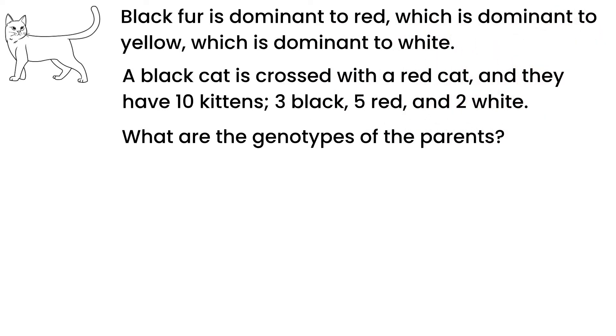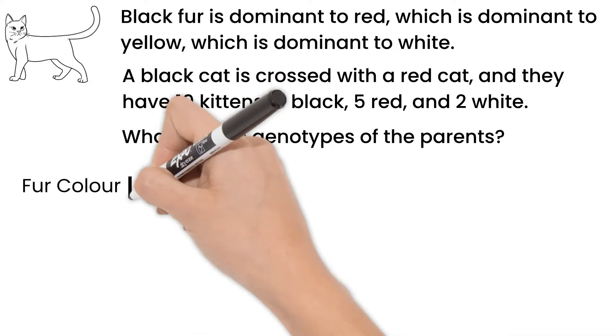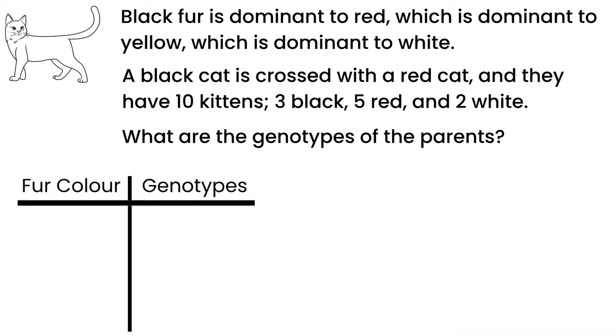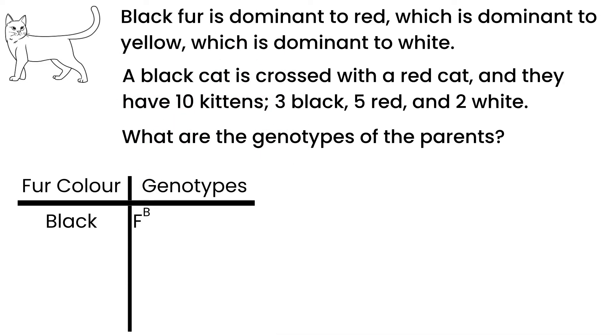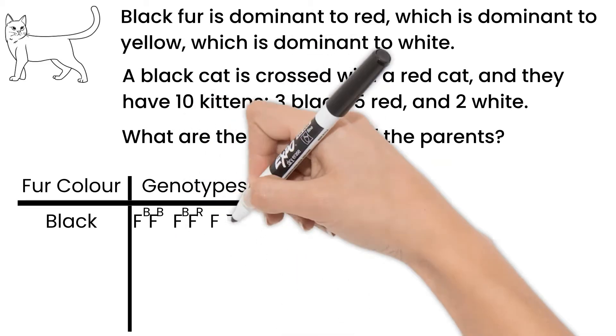First, let's look at what genotypes are possible for each fur color. Even though multiple alleles are involved, each cat will still only get two, one from each parent. For black fur, the cat would have an allele for black fur. We'll show this with a capital F and a B superscript. It could be homozygous for the black allele, or since it is dominant, it might be heterozygous with the red, yellow, or white alleles.